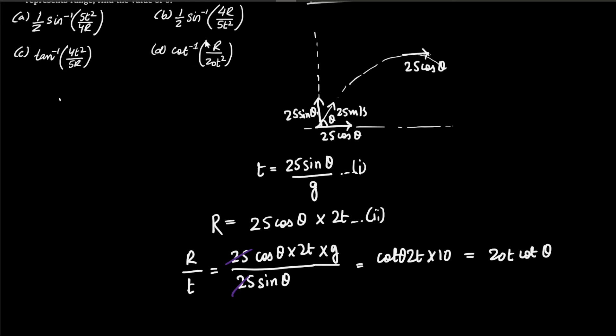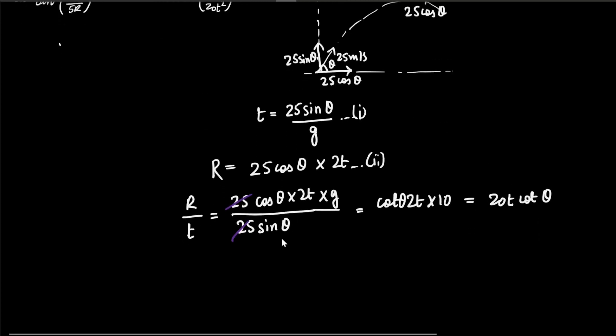Now look at the options, we have cot inverse here and again we need to find the angle theta. So what we could do is from this we can infer that r by 20t square, so basically bringing the square here and again, it's equal to cot theta. Therefore theta is equal to cot inverse r by 20t square. That is option number D.